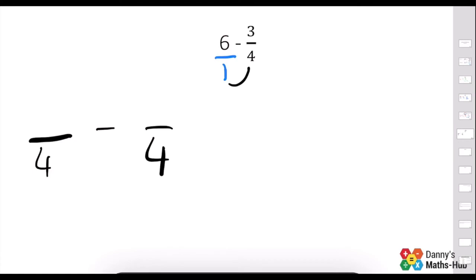So we know both our denominators are going to be 4. 4 times 6 is 24. 1 times 3 is 3. And we end up with 21 over 4. How many 4s go into 20? 5, remainder 1.